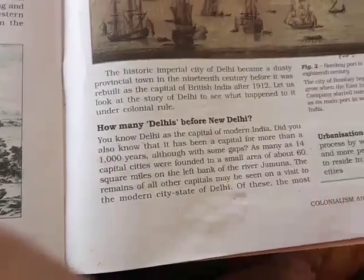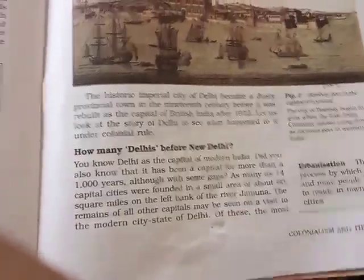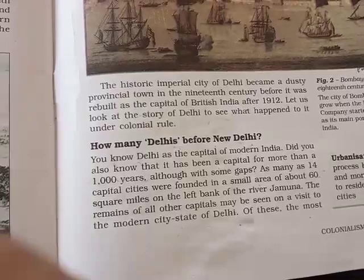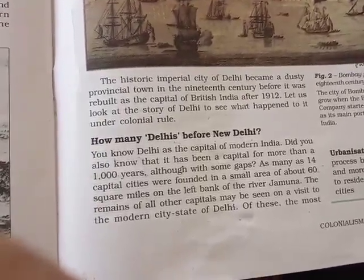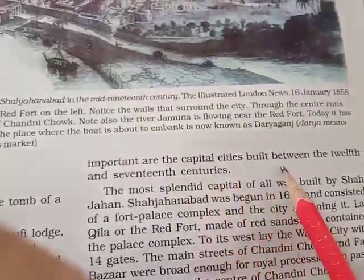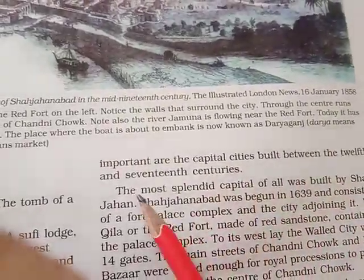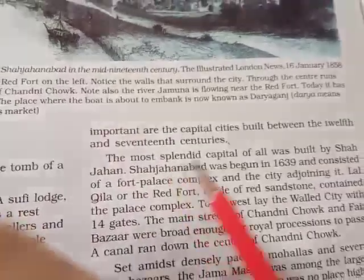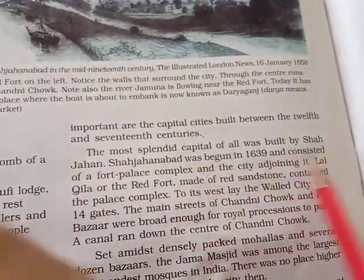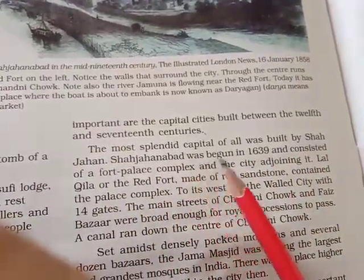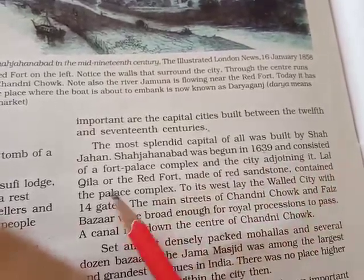These 16 capital cities were founded in a small area of 60 square miles on the left bank of the river Yamuna. The important capital cities were built between the 12th and the 16th-17th century. The most splendid capital was Shahjahanabad, built in 1639, containing a grand palace complex.